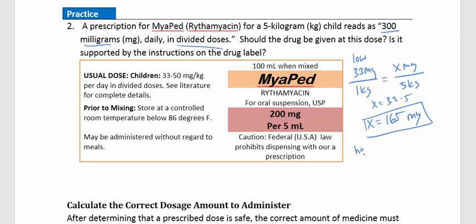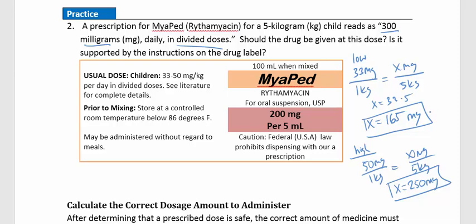On the high side, we could give up to 50 mg per kg. For our 5 kg child, x equals 5 times 50, giving 250 mg in divided doses. So the safe range for this 5 kg child is between 165 and 250 mg per day. The prescription of 300 mg is too high — consult the doctor first before giving this medication.